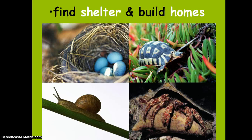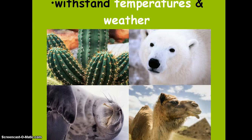Animals or plants need to be able to find shelter and build homes. You see the nest and three different animals that have shells: the turtle, the crab, and the snail. They also need to withstand temperatures and weather. Here you see organisms that have to deal with the tundra — the polar bear and the seal — and the desert, where the cactus and the camel have to deal with hot and dry weather.